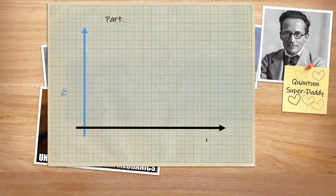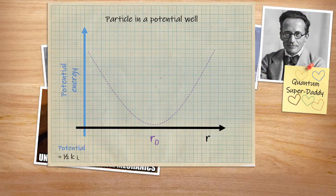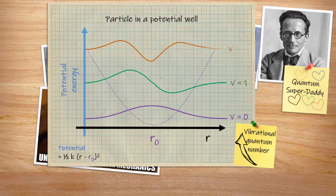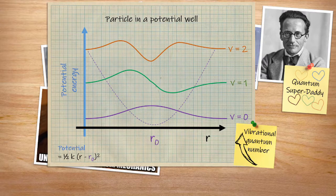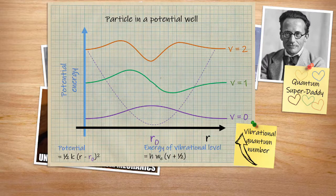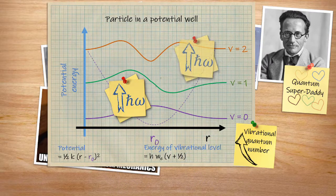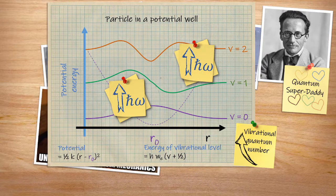Solving the Schrödinger equation for this quadratic potential well gives us quantised energy just as with particle in a box. The shapes of the waves are different, but there's still quantisation. Solving for the energy of each level shows us that there is an even progression in the energy levels, where each is separated by the reduced Planck's constant multiplied by the fundamental frequency of the vibration.